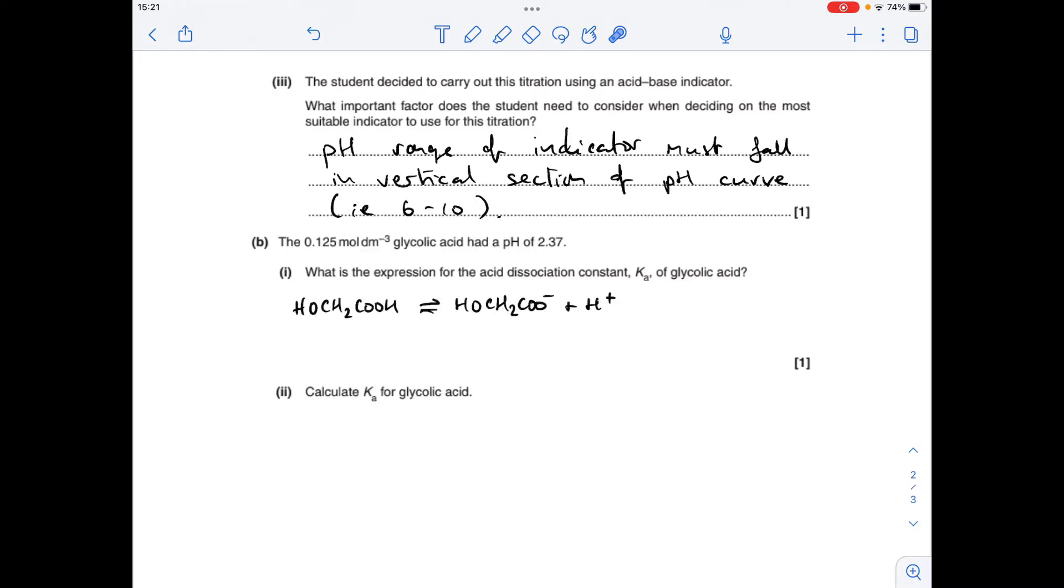Moving on to part B, you'll notice I've written up the dissociation of the glycolic acid. That's going to help me with the Ka expression. So remember, Ka is just an acid dissociation constant. It's an equilibrium constant for a weak acid. So it's going to be the equilibrium concentrations of these multiplied by each other, divided by the equilibrium concentration of that.